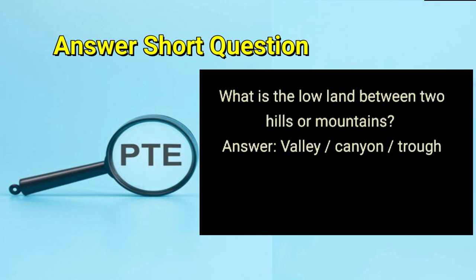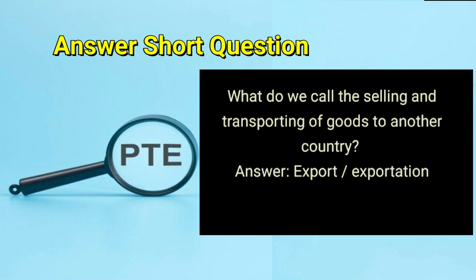What is the low land between two hills or mountains? Answer: valley, or canyon, or trough. What do we call the selling and transporting of goods to another country? Answer: export or exportation.